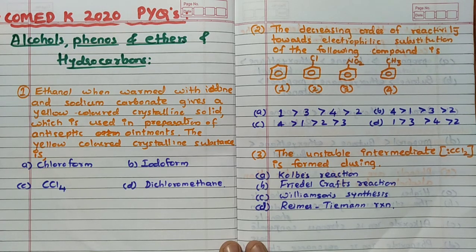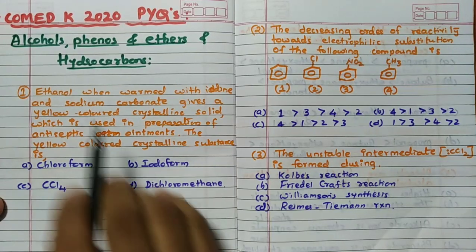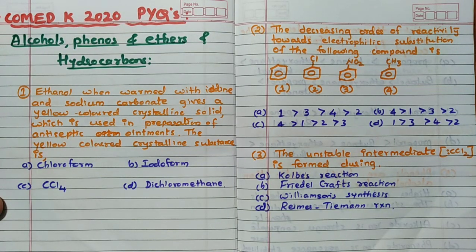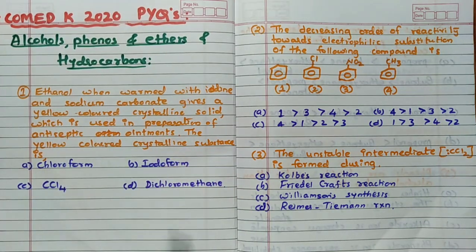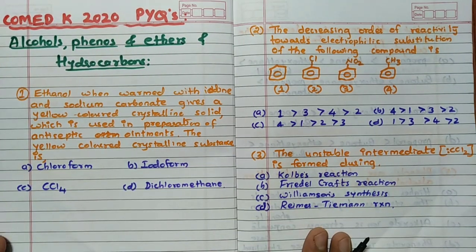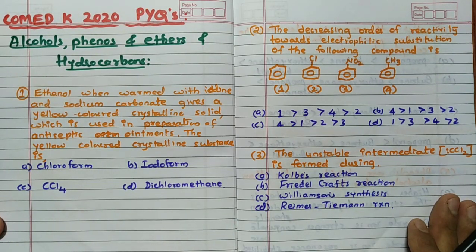Namaste friends, welcome to RH Chemistry. So in today's video I am going to discuss ComedKey 2020 previous year questions on alcohol, phenols, ethers, and hydrocarbons. First you can take the screenshot and you can practice, then I am going to solve in detail. So these are the first 3 questions.